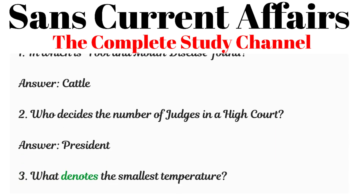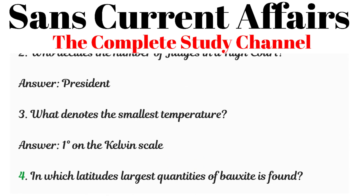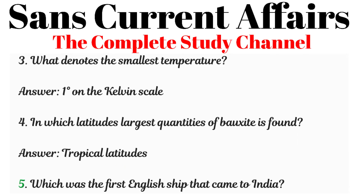Question 3: What denotes the smallest temperature? Answered: 1 degree on the Kelvin scale. Question 4: In which latitudes are the largest quantities of bauxite found? Answered: Tropical latitudes.